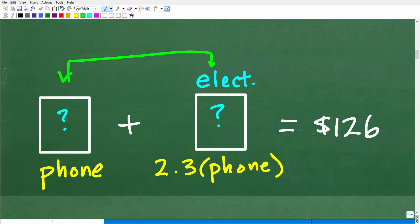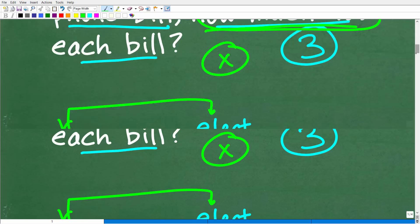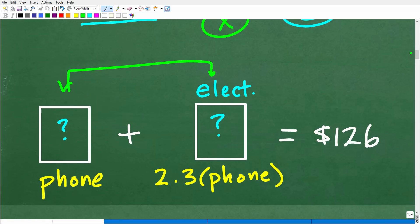Well, again, algebra is a perfect tool because anytime you are looking for an unknown value, in other words, like how much something was, well, we can just kind of use a place value, i.e. a variable, to represent that unknown amount. Now, here, we have two unknown amounts, but all we need is really one unknown amount. For example, if we just let the variable x represent how much the phone bill is, well, we know the electric bill is just going to be 2.3 times whatever this variable is over here is. So the electric bill will be 2.3x.